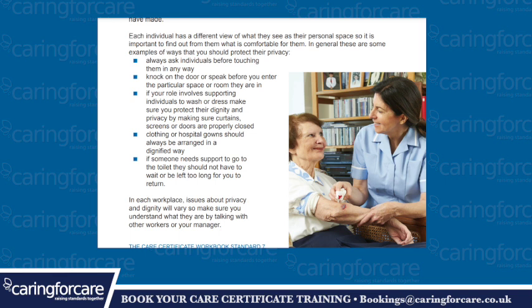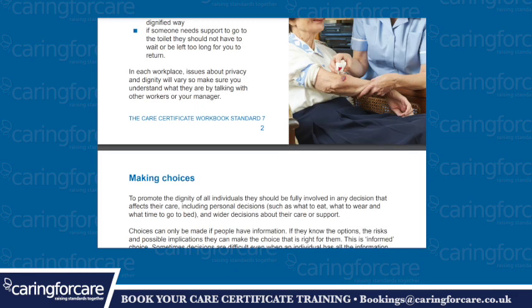In general, these are some examples of ways you should protect their privacy: always ask individuals before touching them; knock on the door or speak before you enter a particular space or room they are in; if your role involves supporting individuals to wash or dress, make sure you protect their dignity and privacy by ensuring curtains, screens or doors are closed properly; clothing or hospital gowns should always be arranged in a dignified way; if someone needs support to go to the toilet, they should not have to wait or be left too long before you return. In each workspace, issues around privacy and dignity will vary, so make sure you understand what they are by talking with other workers or your manager.